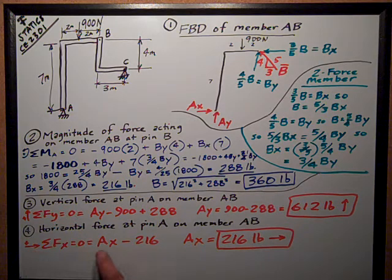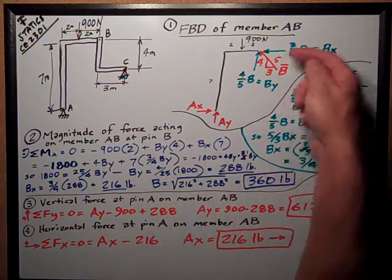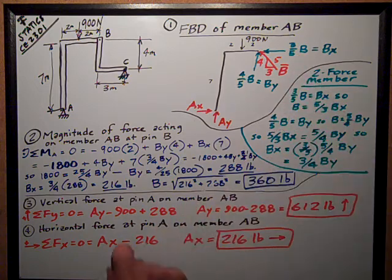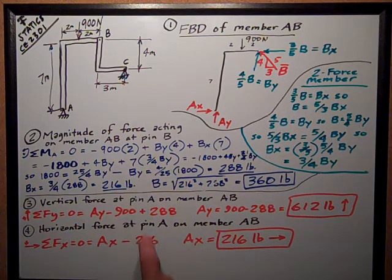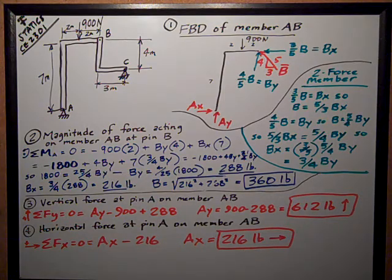Gives us AX minus the only other X force, which is this BX force, which is 216 pounds. So AX is equal to 216 pounds to the right.